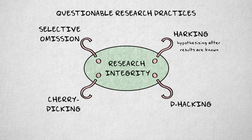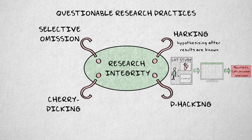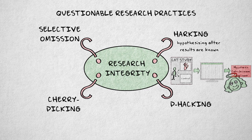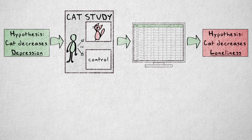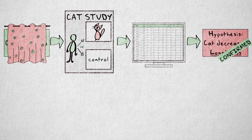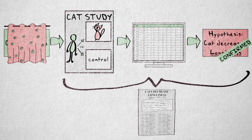HARKing is short for hypothesizing after results are known. This means the hypothesis is adapted to fit the observed data. Of course, researchers are allowed to formulate new hypotheses based on the data they collect. This is basically what drives scientific progress forward. HARKing becomes a questionable research practice if the adapted hypothesis is presented as the original hypothesis, without referring to the true original hypothesis.